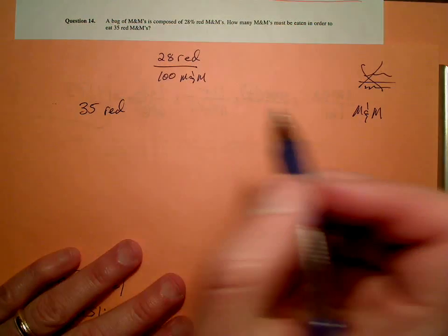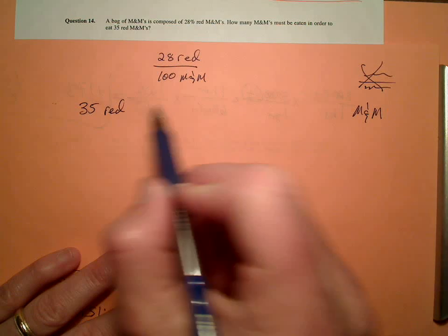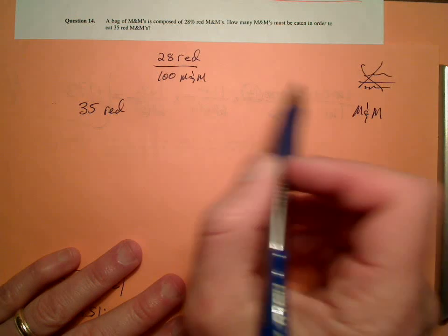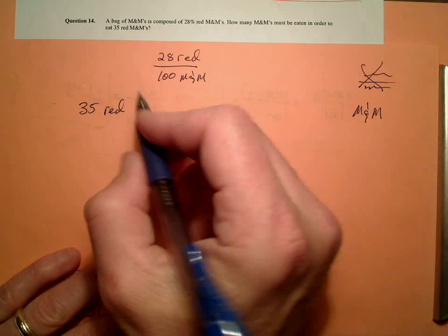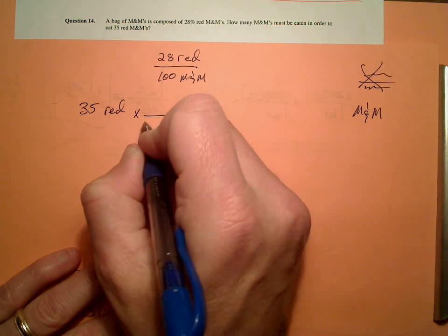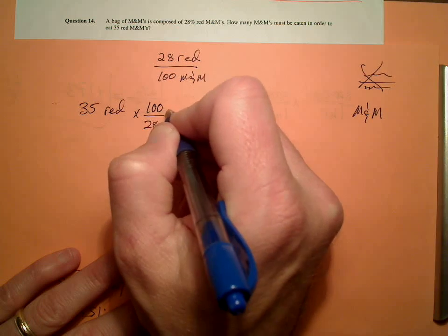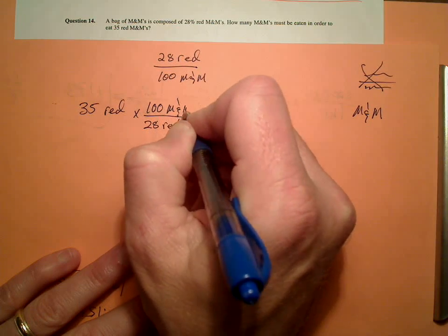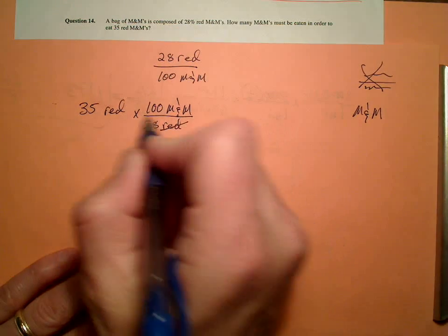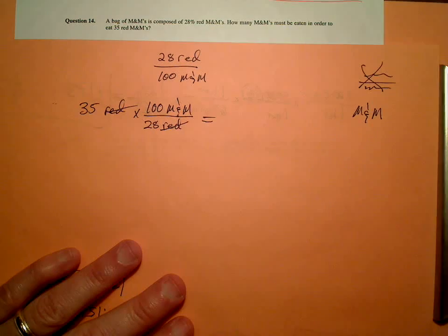So 35 red M&M's. I need to get from red M&M's to total number of M&M's. My percentage will do it for me. I know for every 28 red M&M's, I have a total of 100. Red M&M's cancel. Bingo.